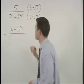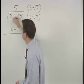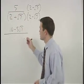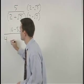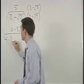And in the denominator, notice that we must FOIL. 2 times 2 is 4. 2 times negative root 7 is negative 2 root 7.